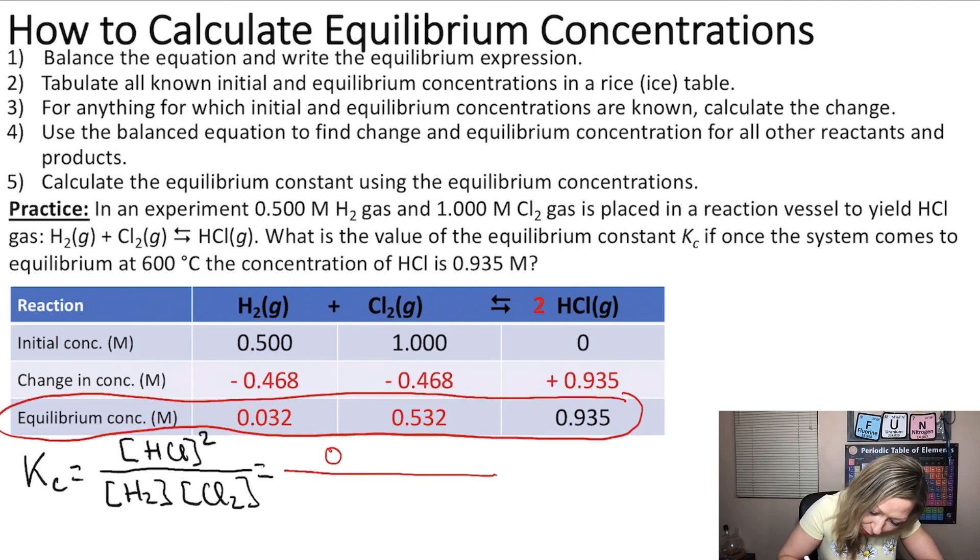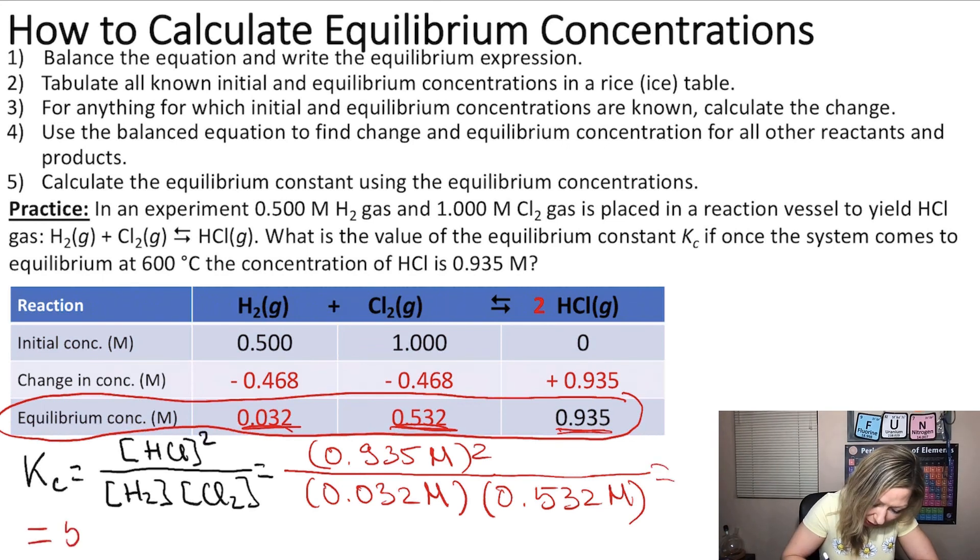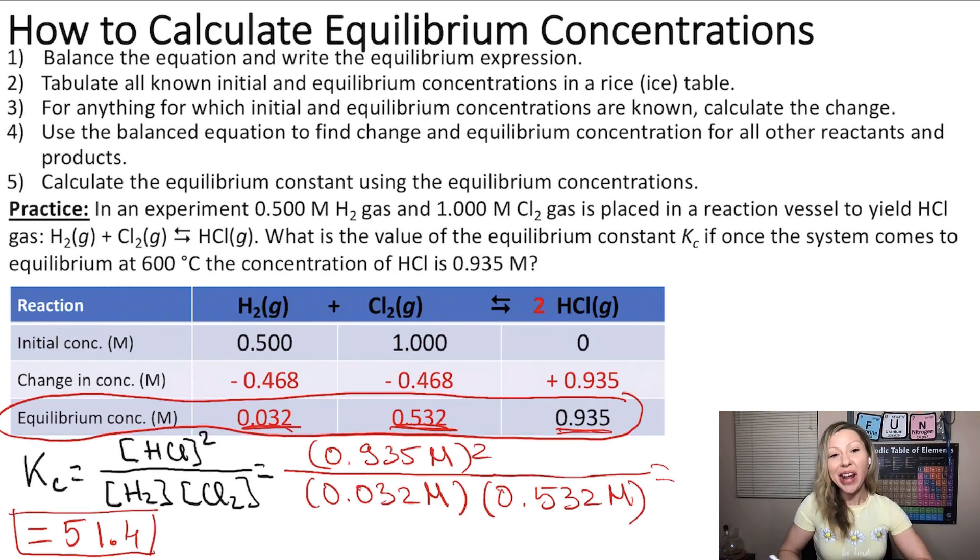So I have 0.935 mol per liter squared. This is the concentration of HCl, divided by 0.032 mol per liter, and that is multiplied by 0.532 mol per liter. So those values are, again, simply coming from here. And if you do this calculation, you are going to get 51.4 as your Kc. I hope this makes sense. See you in the next video.